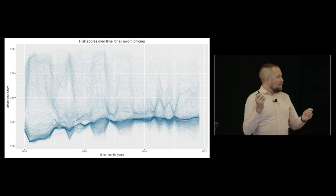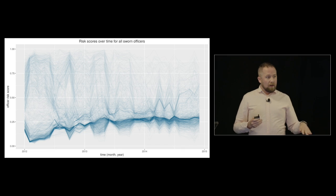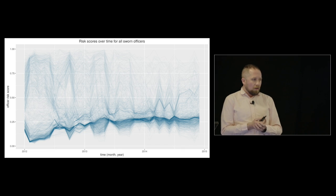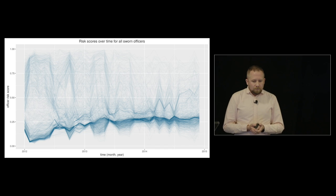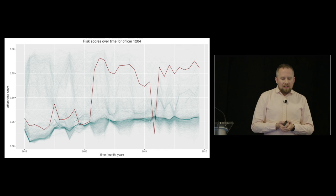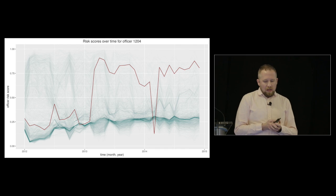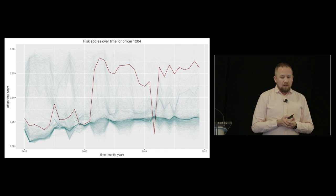As you can see, there's a great variation among officers. Many of the officers are very low because many officers are at very low risk of having an adverse incident. But there are some officers that are really high. So we can pull a single officer out of this and say, okay, what do they look like over time? And we can see there's actually quite a bit of variation over time. So this is for officer 1204 in our database, which is anonymized. That's not his real name.